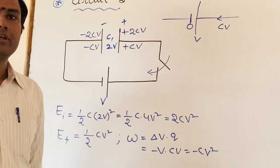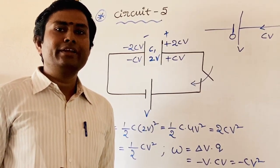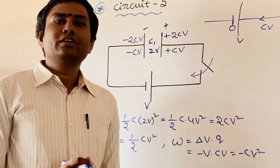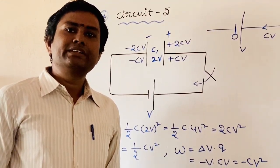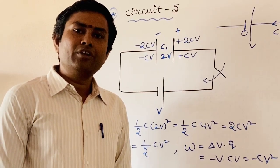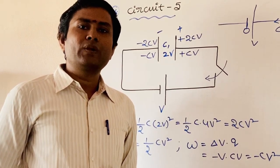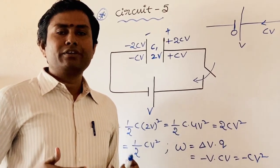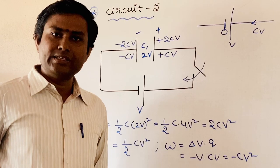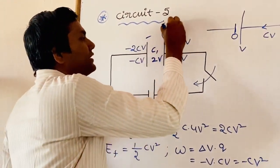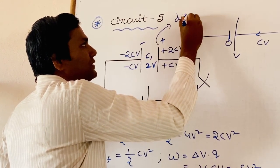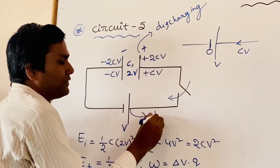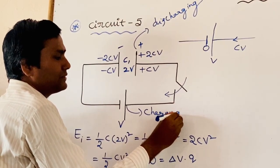The meaning here is: the battery is not giving energy to the charge CV. Instead, the battery was absorbing energy from the charge CV. In other words, the capacitor is in a discharging state and the battery is in a charging state.